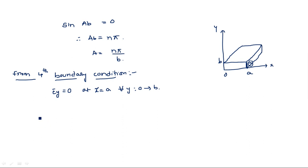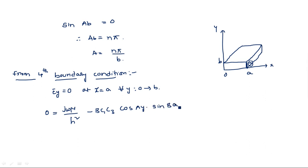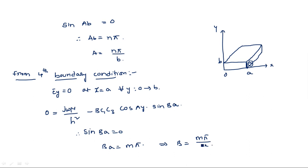Again, take the relation between Ey and Hz, substitute the latest equation, and differentiate. We get: 0 = (jωμ / h²)(−b)·c1·c3·cos(ay)·sin(ba). Therefore sin(ba) = 0, and ba = mπ. So b = mπ/a. From the fourth boundary condition we have obtained b = mπ/a, and from the third boundary condition we had a = nπ/b.